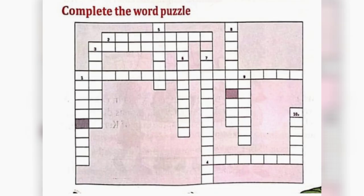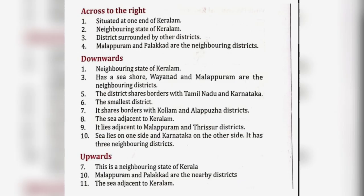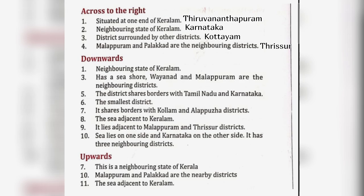Complete the word puzzle. Across to the right: 1. Situated at one end of Kerala — Thiruvananthapuram. 2. Neighboring state of Kerala — Karnataka. 3. Districts surrounded by other districts — Kottayam. 4. Malappuram and Palakkad are the neighboring districts — Thrissur.